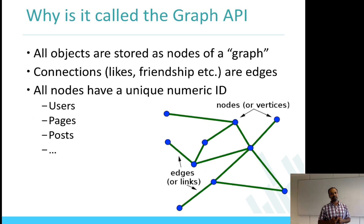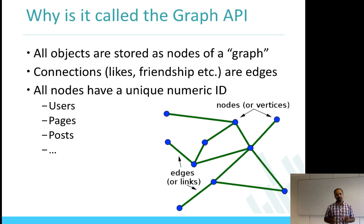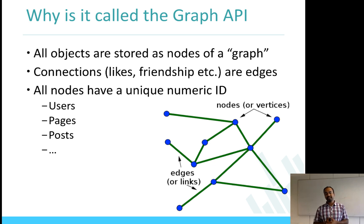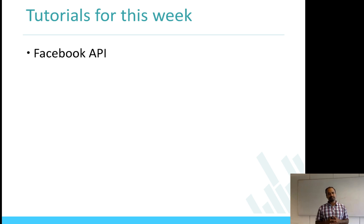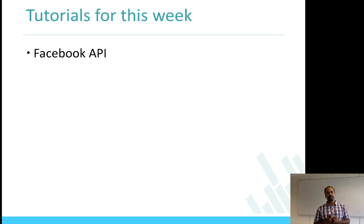All objects are stored as nodes in the graph; connections like friendships and likes are edges; and all nodes have a unique numeric ID — users, pages, and posts. We've been talking mostly about users, but we will later talk about pages as well, which is one of the ways content can be generated on Facebook. In the tutorials this week, you will look in detail at what a Facebook API is, how to create the secret key, what kind of authentication you need to provide to Facebook for collecting data, and what data can be collected.